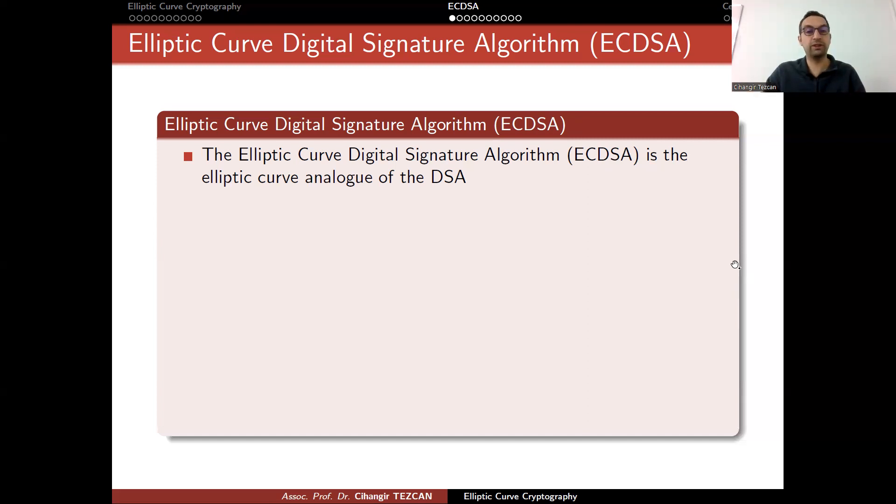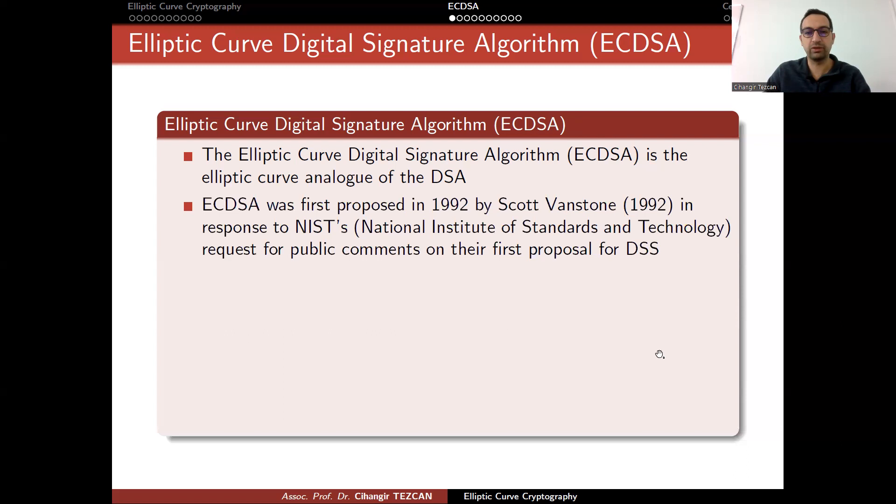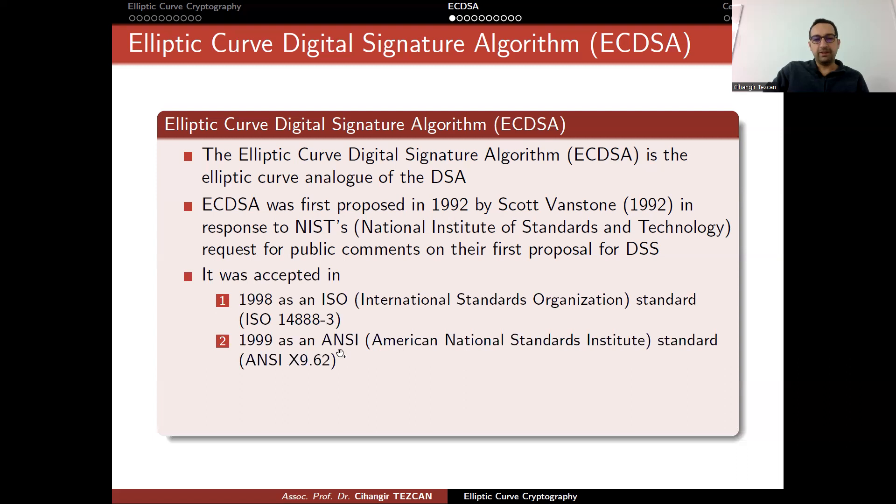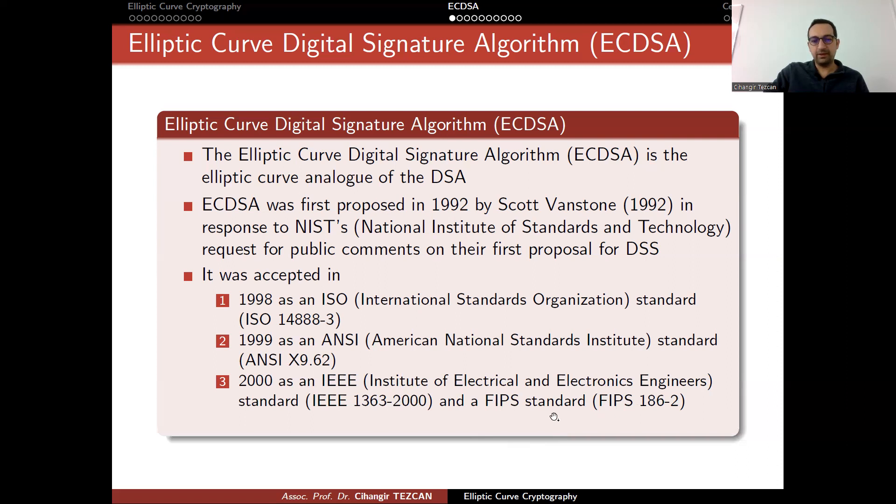Recently, Bitcoin added Schnorr signatures as an alternative. ECDSA was first proposed in 1992 by Scott Vanstone in response to NIST's request for public comments on their first proposal for digital signature standards. It was accepted in 1998 as an ISO standard, ANSI standard, IEEE standard, and also FIPS standards.